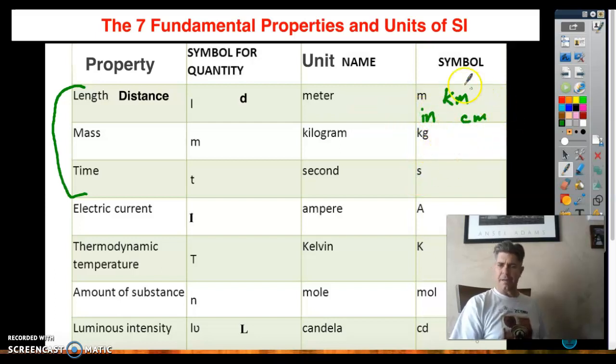So we can use those, or 12 inches in a foot. The metric system, the reason we use the metric system, is because it's all base 10. So it's easy to go from one to the other. It's not 12 inches in a foot, 5,280 feet in a mile. It's all base 10, so it's just moving the decimal.